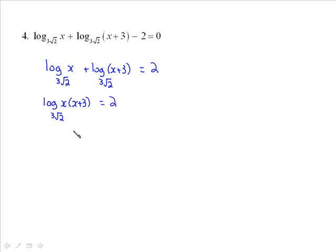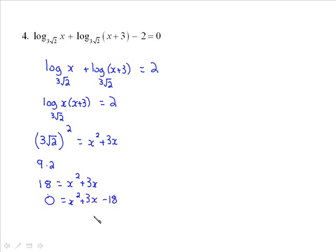And at this stage you really have to train yourself to go into exponential form, because some people have a tendency just to stare at this for a while. You don't want to do that. Put it in exponential form. So the base 3 root 2 to the exponent of 2 is equal to x times x plus 3, which I'm going to just write as x squared plus 3x. Also be careful with squaring that radical. I know that most of you will have no trouble with it, but don't make a mistake with this. Square both parts of it. 3 squared is 9, root 2 squared is 2. So that means 18 is equal to x squared plus 3x. And then just bring it all over. So 0 is equal to x squared plus 3x minus 18.